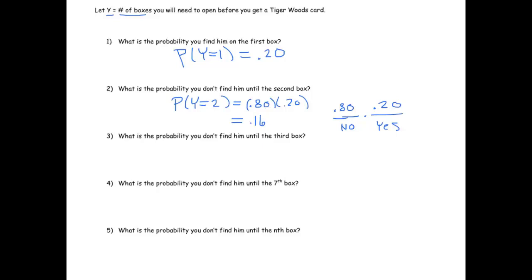What's the probability you don't find them until the third box? Well, that would be the probability that Y equals 3. And what has to happen for us to find our first Tiger Woods card on the third box? Well, we have to not get a Tiger Woods card on the first two boxes we open. And there's an 80% chance of that happening each box. And then we have to finally get it on the last one. And so this probability is going to be equal to 0.80 squared times 0.20. And 0.8 squared times 0.2 gives us 0.128.